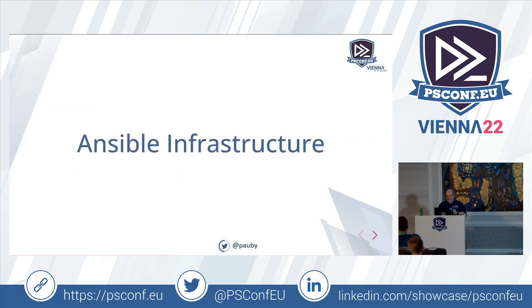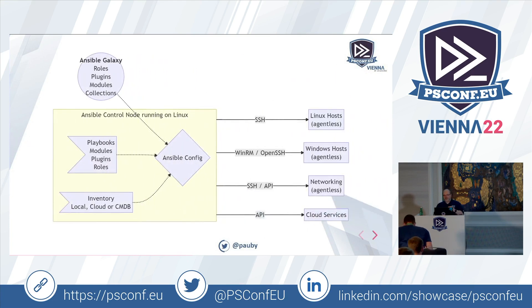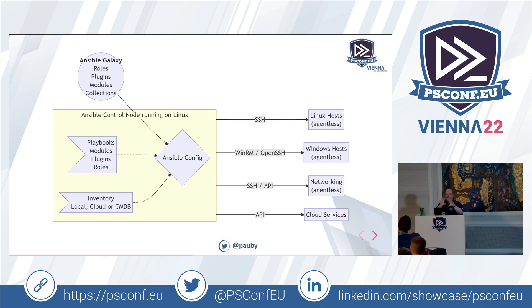Now, the Ansible infrastructure — the bit we're interested in from a Windows perspective. I'm hoping this diagram comes out okay. We're going to concentrate first on the little yellow box, which represents the Ansible control node — the bit that does all the work and communicates with all the devices. The two other flag-type boxes we'll cover are playbooks, modules, plugins, and roles, and then inventory.